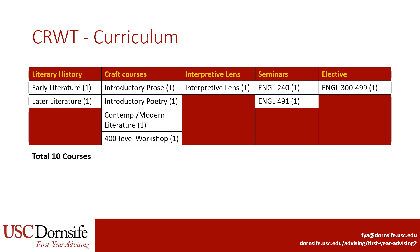First, students will take two literary history courses: one in early literature, focusing on literature up to about the mid-1800s, and another in later literature, focusing on literature after the mid-1800s. Next, students will take four craft courses, including introductory prose, introductory poetry, a contemporary or modern literature course, and a 400-level workshop seminar.